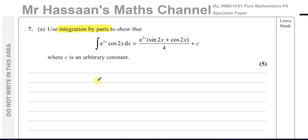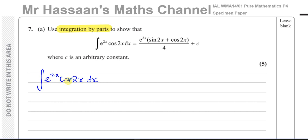This is a situation where you have a product of two separate functions with no function within a function and no substitution you can do. They're unrelated to each other in terms of integrating them, so we use integration by parts.